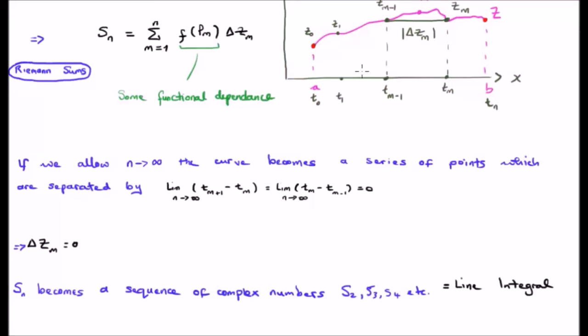This means that delta z sub m will also go to 0. So, as the point z sub m and z sub m minus 1 get closer and closer together, delta z sub m is going to go to 0.